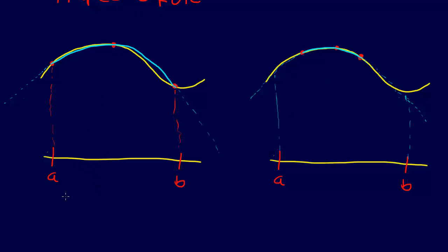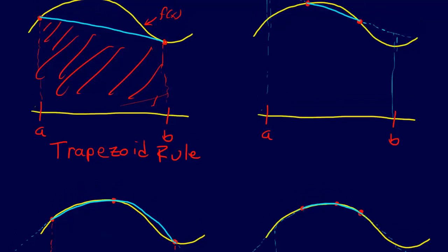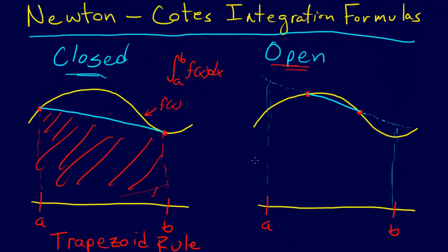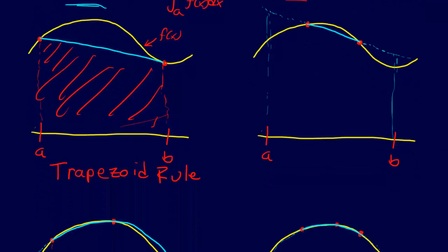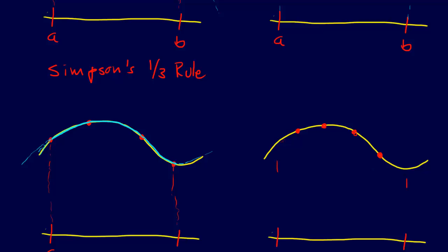In this case, we're using three points. That's called Simpson's one-third rule. This is on the closed side. The other stipulation is that all these data points have to be evenly spaced. This is a stipulation for the Newton-Cotes integration formulas, and we'll see that when we derive them.